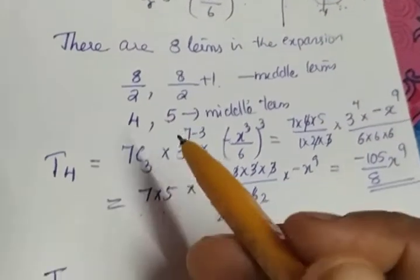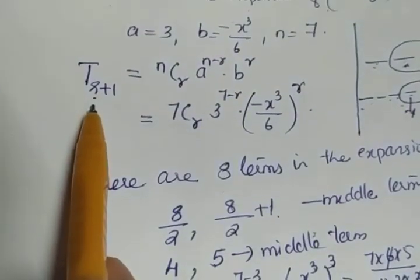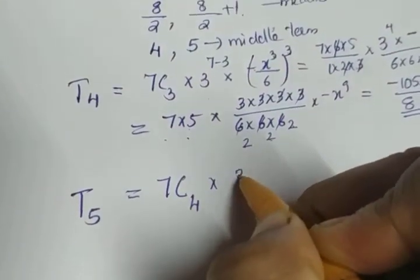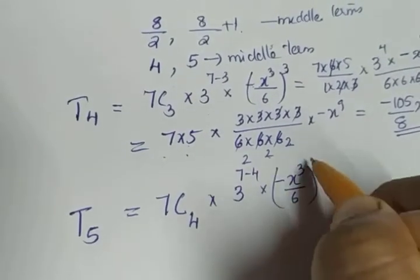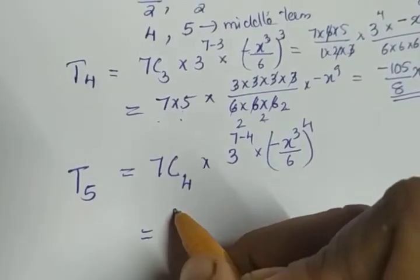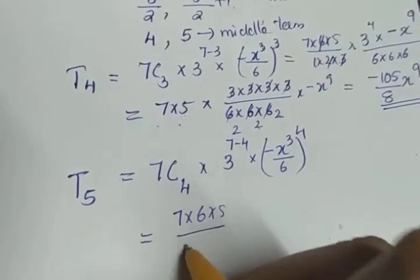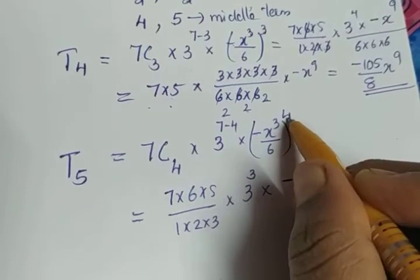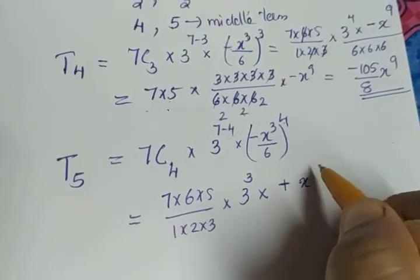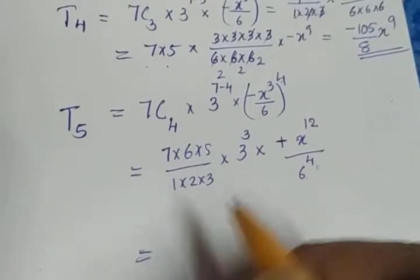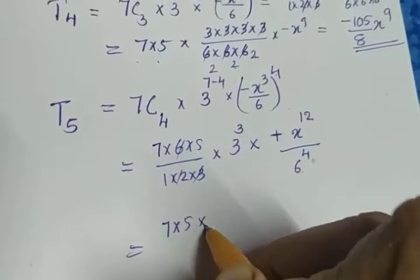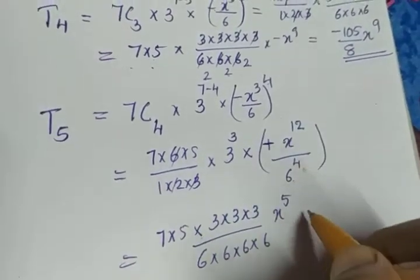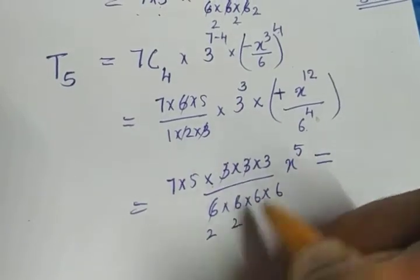Now we have to find T5. The general term T(r+1), so to find T5 the value of r will be 4. So 7C4 into 3 raised to 3 into minus x cube by 6, the whole raised to 4. Now 7C4 equals 7C3 by the property of combination, which is 35. Since the power is even, the negative becomes positive. x cube the whole raised to 4 gives x raise to 12, divided by 6 raised to 4. Simplifying by cancelling 3 and 6 repeatedly gives the fifth term.